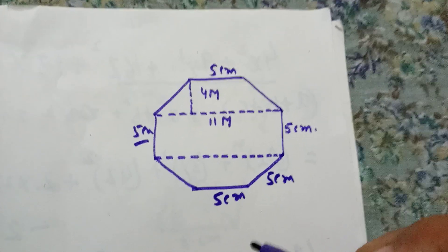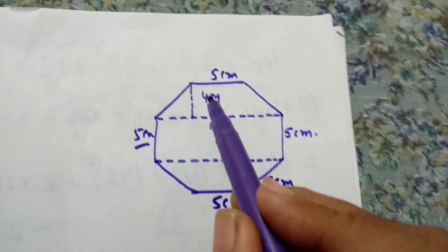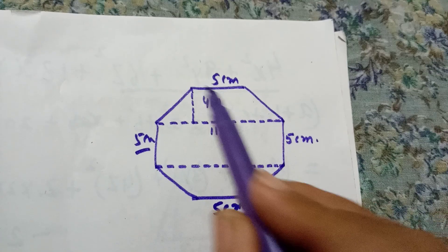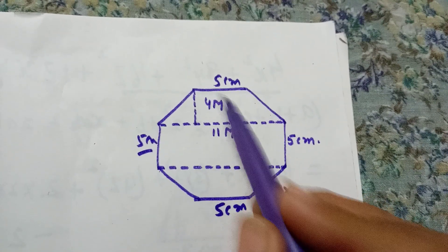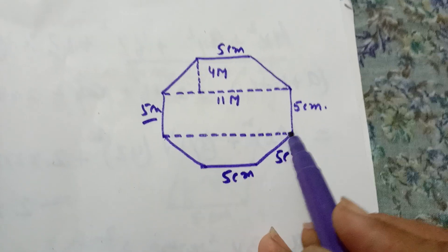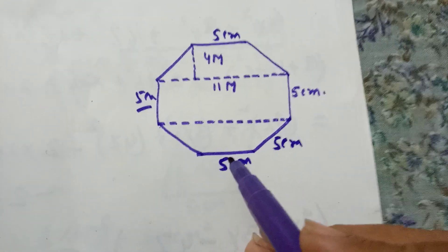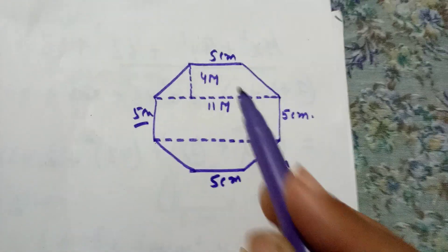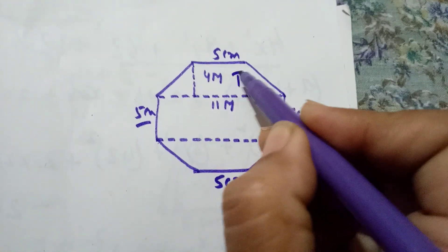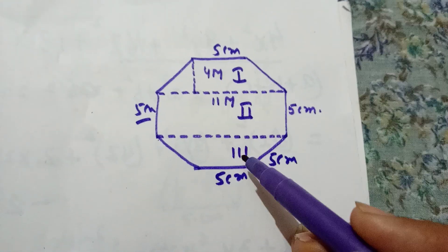It is mentioned that this diagonal is 11 meters and this distance is 4 meters. This line is parallel to the other one, which means this is a trapezium. We have joined two more points so that we can get one more trapezium. Now this figure is divided into three parts: the first shape, the second shape, and the third shape.